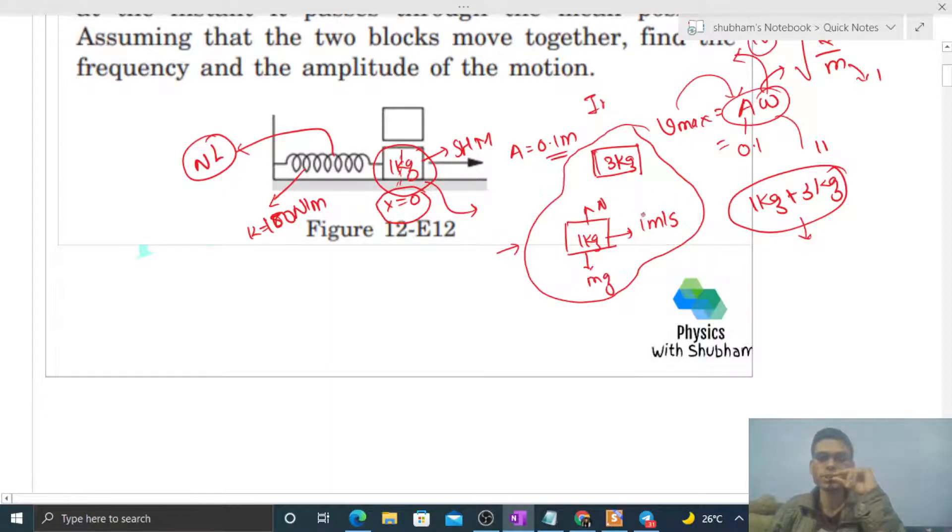The linear momentum of the system in horizontal direction will be conserved; it will not change. Initial linear momentum equals final linear momentum. Initial linear momentum is how much? This 1 kilogram block was moving with 1 meter per second, so that is 1 times 1.